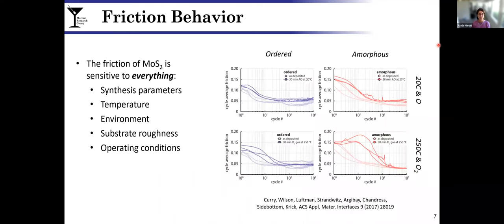The challenge with using MoS2 for such applications is that its frictional behavior depends on pretty much everything. It depends on how it's synthesized, the temperature, the environment, even the substrate roughness. Shown here on the right is just one representative example where we're looking at friction as a function of sliding cycle for ordered versus amorphous at different temperature and oxygenation conditions. We see that the friction varies dramatically from case to case.